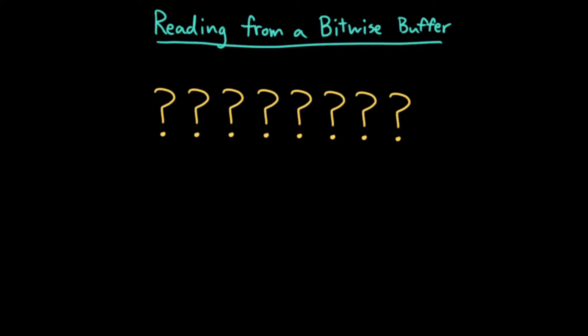Let's imagine that I have a bitwise buffer, a single byte of eight bits, where each of these question marks is some bit. This is the most significant bit, and this is the least significant bit.